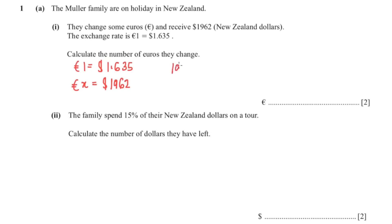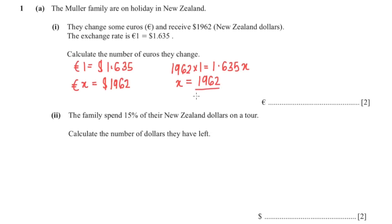Now I'm going to cross multiply, so that would be 1962 multiplied by 1 equals 1.635x. To find x, I would do 1962 over 1.635, and when I put that into my calculator I would get a value of 1200 euros.